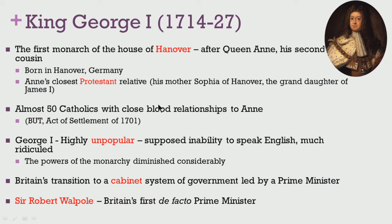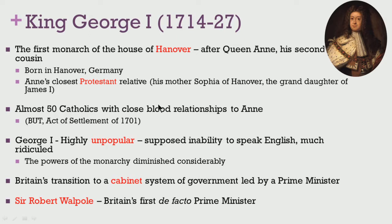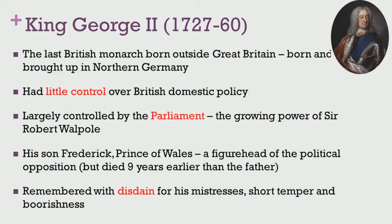However, he did not go down very well with the English public and was much ridiculed by his contemporaries. It was during the reign of George I that the powers of the monarch diminished considerably in England, and we also find Britain transitioning to a cabinet system of government primarily led by a prime minister. This is also the time which saw the emergence of Sir Robert Walpole to power, who is considered by later historians as Britain's first de facto prime minister. George II succeeded George I and was the last British monarch to be born outside Great Britain, also born and brought up in northern Germany, with very little control over British domestic policy.